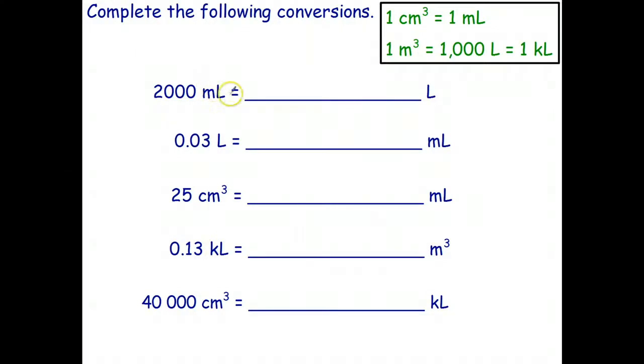For the first one, we're going from milliliters to liters, small to big. If I'm breaking something up into bigger units, I need a smaller number, so I divide. Divide by 1,000, and 2,000 milliliters is 2 liters. Converting back from big units to small units, I multiply by 1,000. The decimal point moves three places, giving me 30 milliliters.